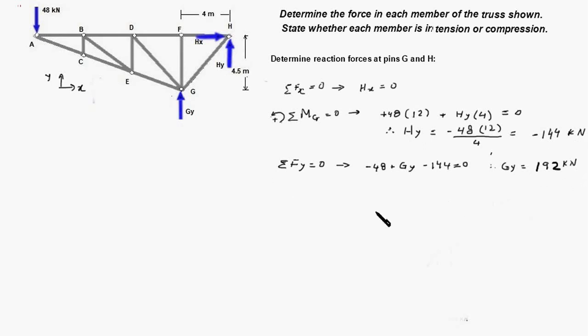And now the second step is to identify zero force members in this truss so that it gets simplified. Let us consider joint C. Members AC and CE are collinear. Member BC is not collinear. There is no force on joint C therefore member BC is a zero force member.